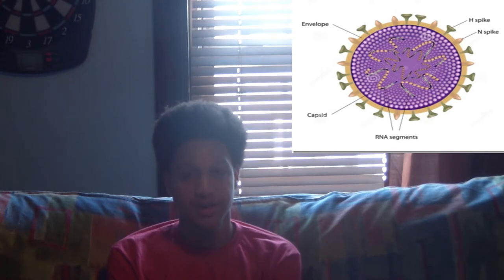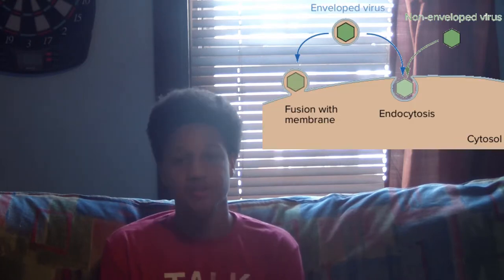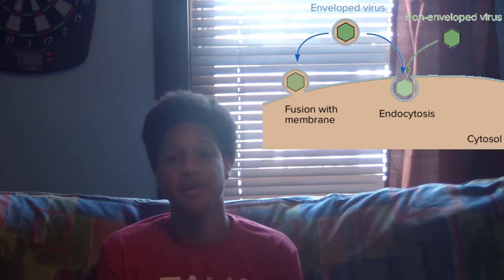If the virus does have a viral envelope, this means that the capsid is contained in one or multiple lipid bilayers. These lipids are made from the endoplasmic reticulum and transported with the Golgi bodies for the virus. When an enveloped virus comes in contact with the cell, instead of using endocytosis, typically it will fuse with the membrane of the cell.